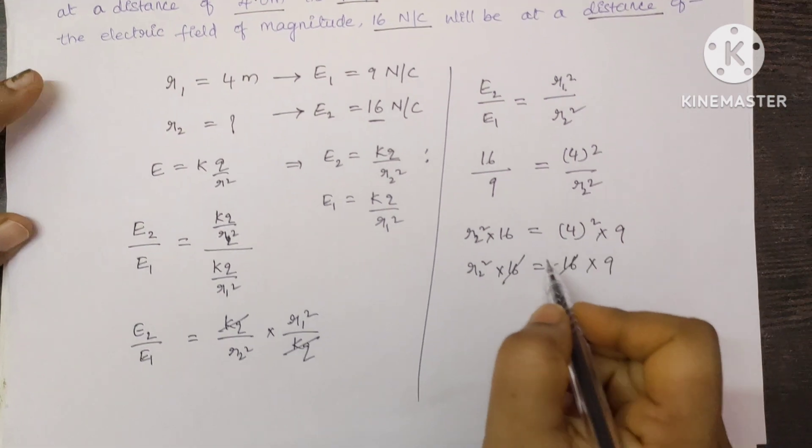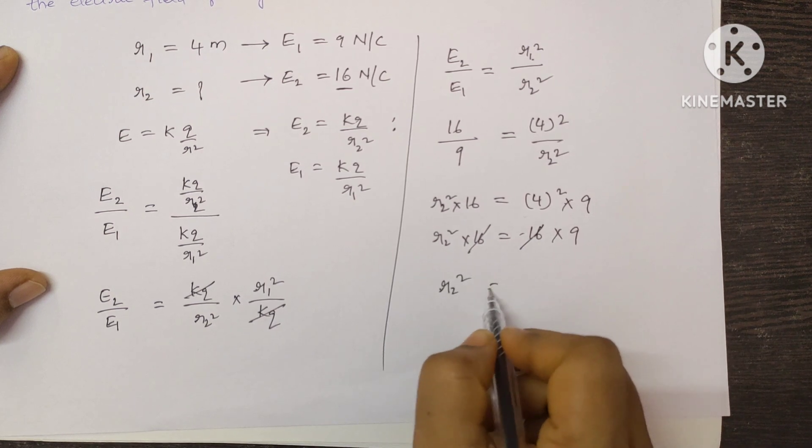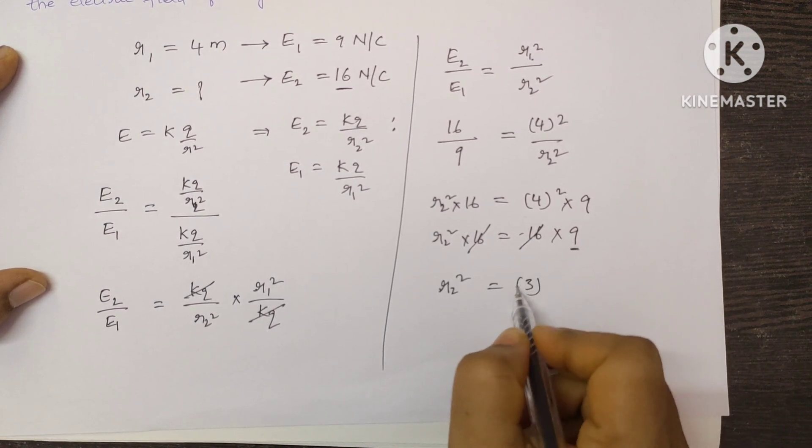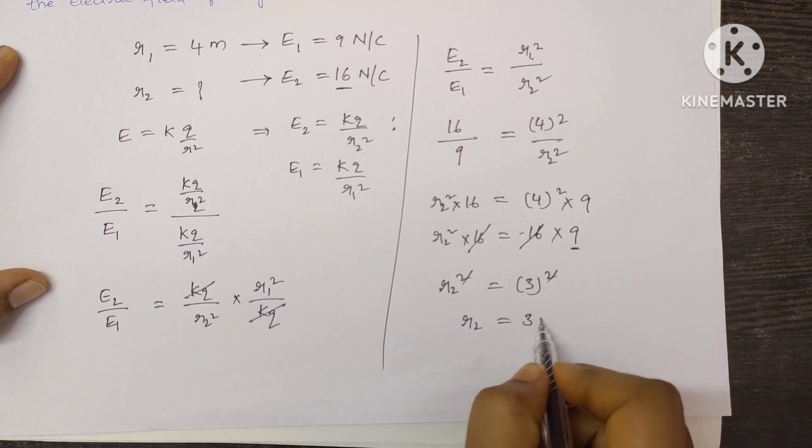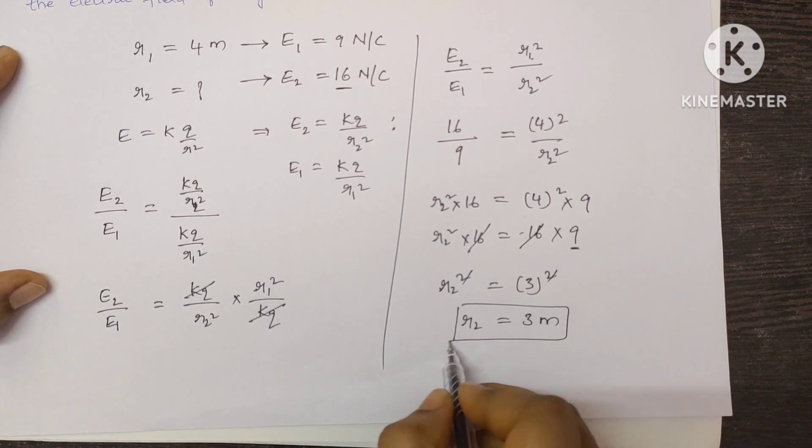The 16 and 16 will get cancelled. The remaining terms: R2 square is equal to 9, which can be written as 3 square. On both sides square will get cancelled, therefore R2 is equal to 3 meters. So this is our answer.